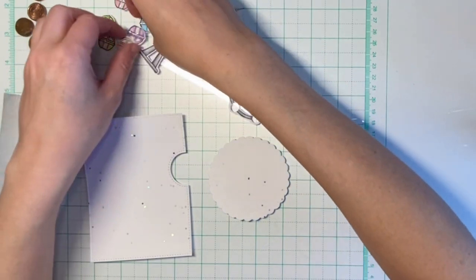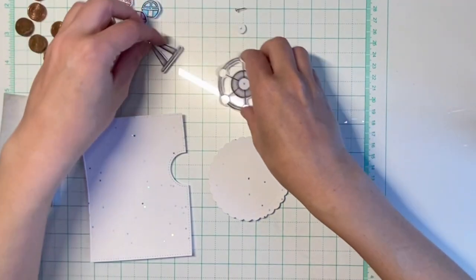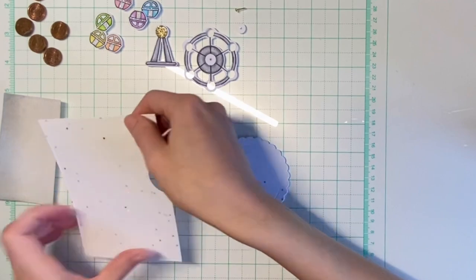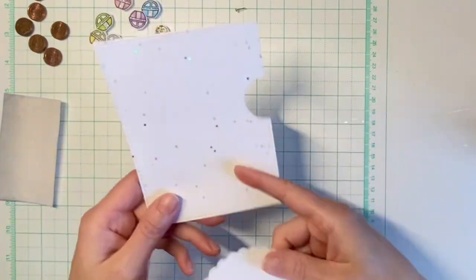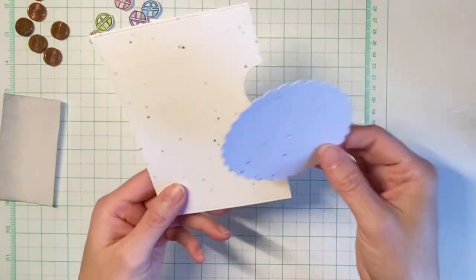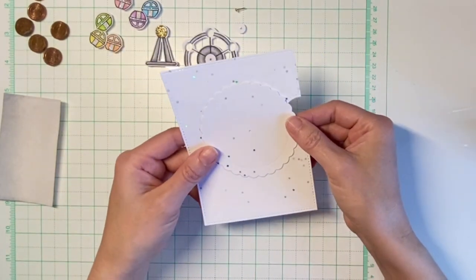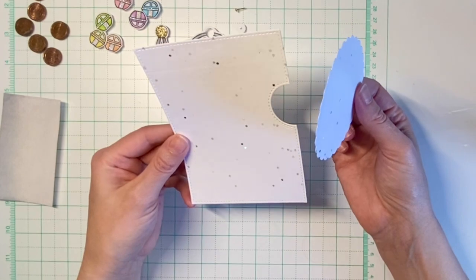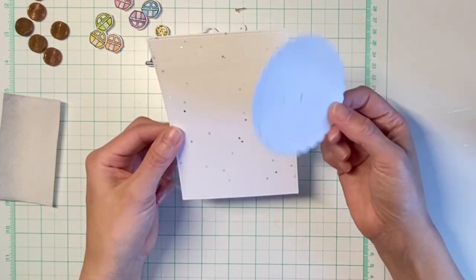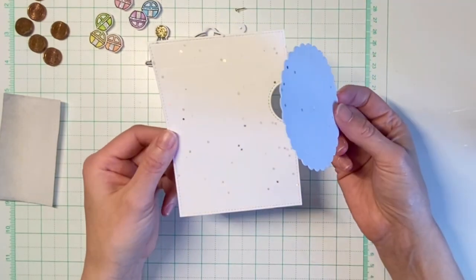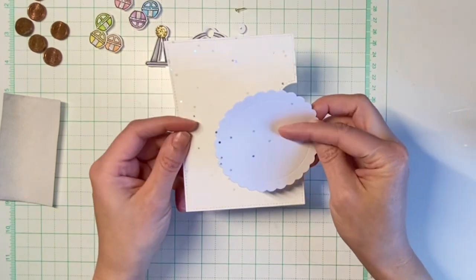Please note that I punched a tiny hole in the center of the wheel. We will need that later. And also the reveal base and the reveal wheel. I've cut them from the same pattern paper.